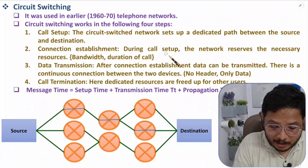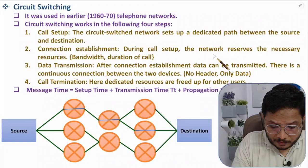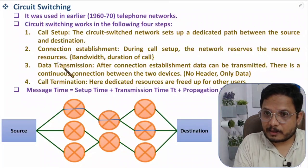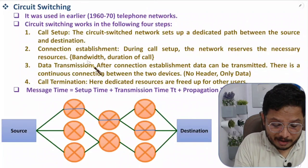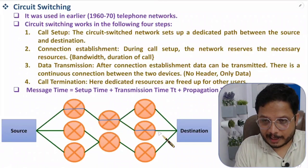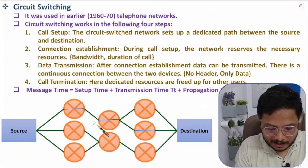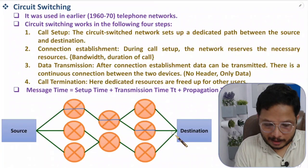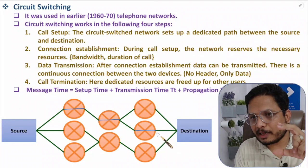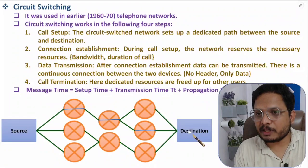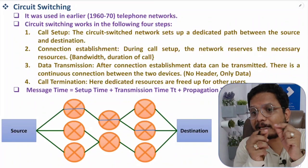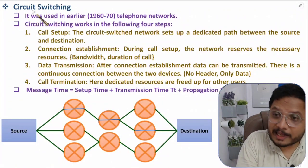During call setup the network reserves the necessary resources: bandwidth and duration of the call. Source and destination will be utilizing the bandwidth of this link for a finite duration. There is a physical connection between them, which is why it is called a circuit-switched network.